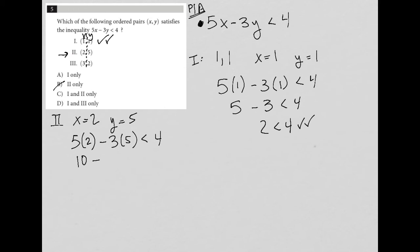So 5 times 2 is 10. Minus 3 times 5, which is 15, is less than 4. 10 minus 15 is negative 5. And it is, in fact, true that negative 5 is less than 4.